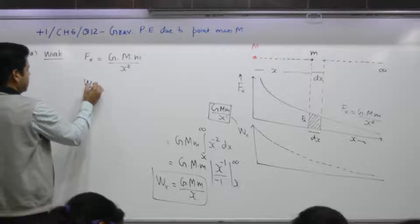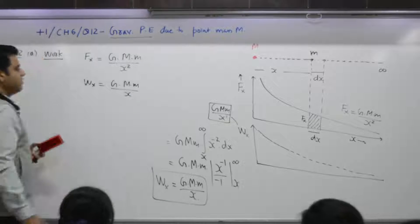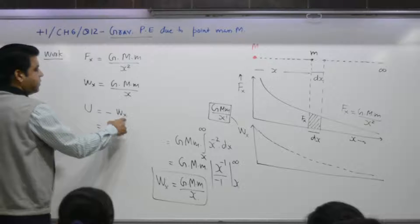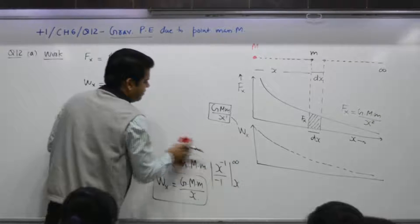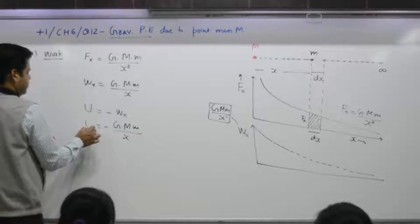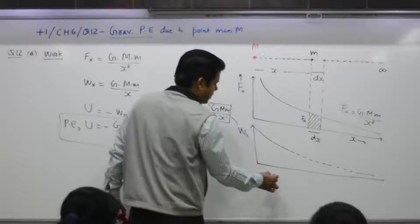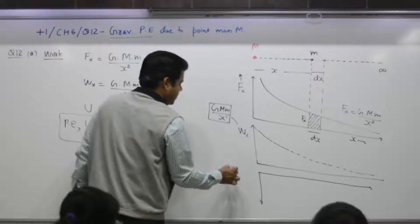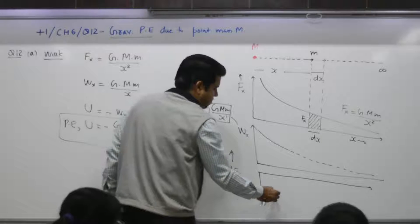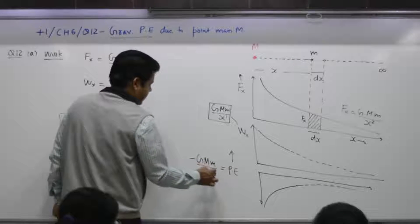Work done is GMm over x. Now the purpose was to find gravitational potential energy. Gravitational potential energy U is equal to negative of the work done in taking the object from x to infinity. Work done was GMm over x, so potential energy is minus GMm over x. The graph has the same magnitude but the sign is negative, so it lies below the axis.